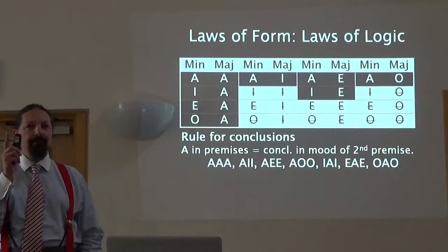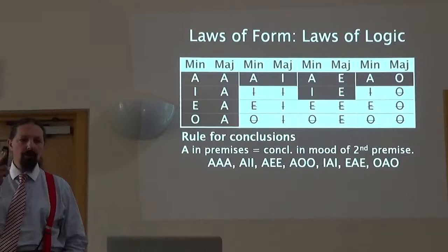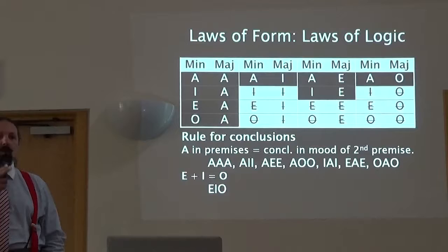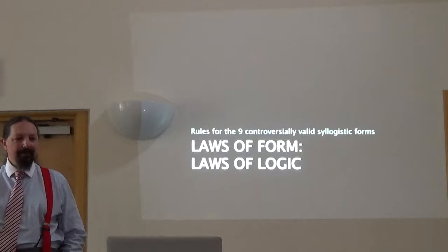If we have pairs of propositions which have an A proposition in them, the conclusion will match the mood of the second proposition. That rule stands for seven of the pairs. There's one other pair — the EI pair — and all you have to remember about that is Old MacDonald's farm: it's EIEIO. I teach logic to nine-year-olds and always use this system, so I've invented things that make it more memorable.